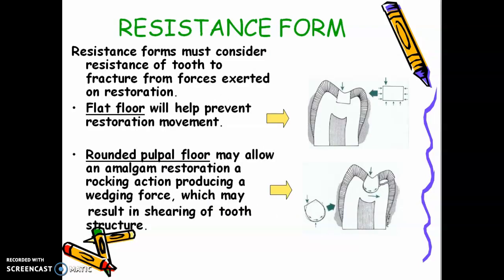Resistance forms must consider resistance of tooth to fracture from forces exerted on restoration. Flat floor will help prevent restoration movement. However, if you have rounded pulpal floor, it may allow an amalgam restoration rocking action, producing a wedging force which may result in shearing of tooth structure. It will crack, and you don't want that. That's why, how do we achieve resistance form in your preparation? You have flat pulpal floor, adequate pulpal floor depth, smooth walls, defined line angles but rounded, no sharp line angles in your preparation.